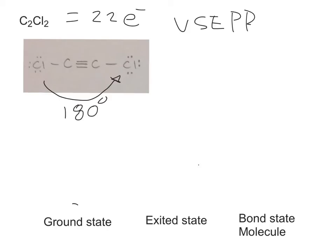The ground state of carbon, the excited state, and then the bond state of the whole molecule. For the ground state of carbon, we're gonna start on the 2s subshell which has two electrons, and then move to the 2p subshell. For this one, there's only two unpaired electrons.